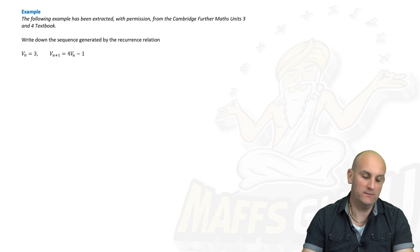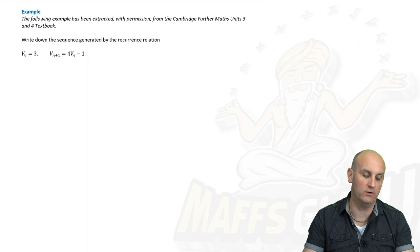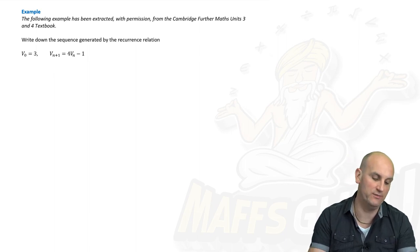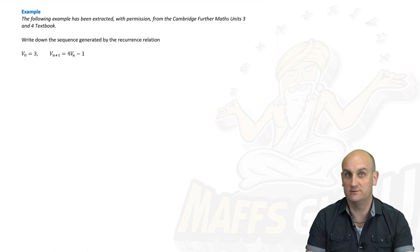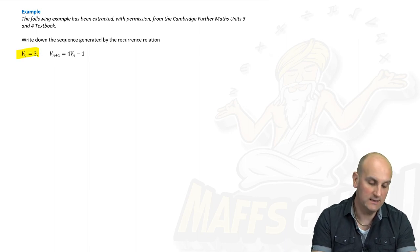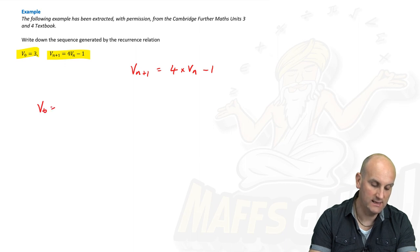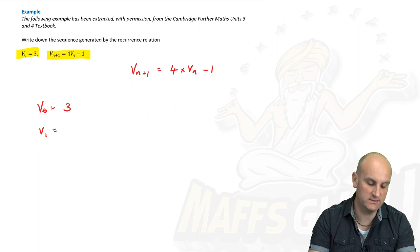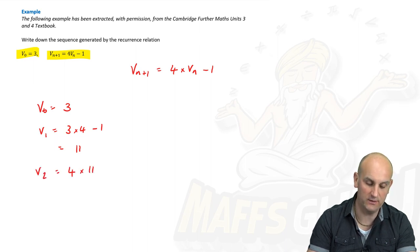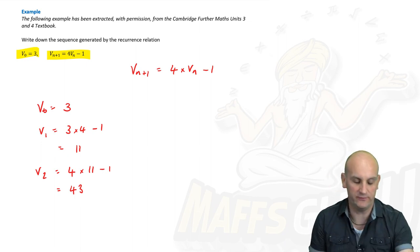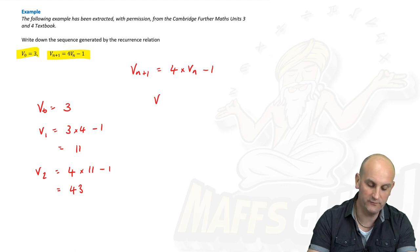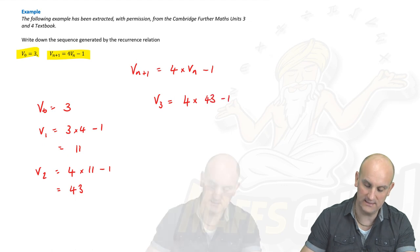Let's look at two examples from the Cambridge Further Maths textbook. Thank you very much Cambridge for allowing me to use your examples. Write down the sequence generated by the recurrence relation there. When it says write down the sequence generated by recurrence relation, I can't imagine it means all of it. But if we decode the formula, V_0 = 3 and it says to get to our next term, so V_{n+1}, to get to the next term do 4 times my previous term and subtract 1 from the answer. So if we have V_0 = 3, then V_1 is going to be 3 × 4 - 1 which is 11. My next term is going to be 4 times my previous which was 11, subtract 1, which is 44 - 1 = 43.